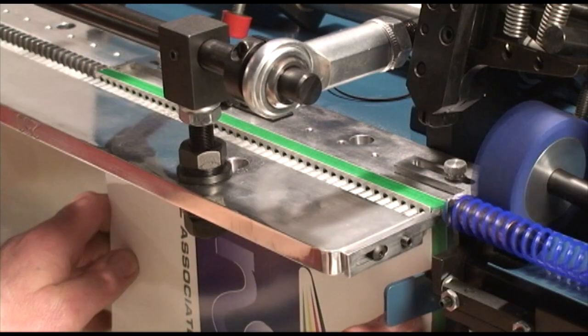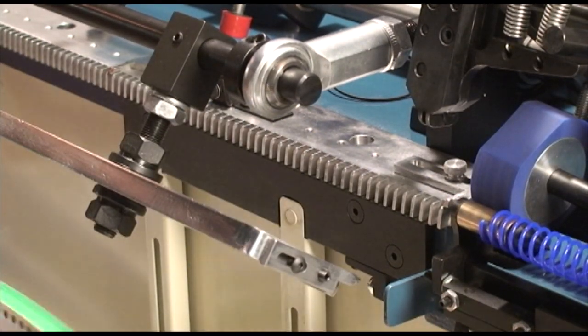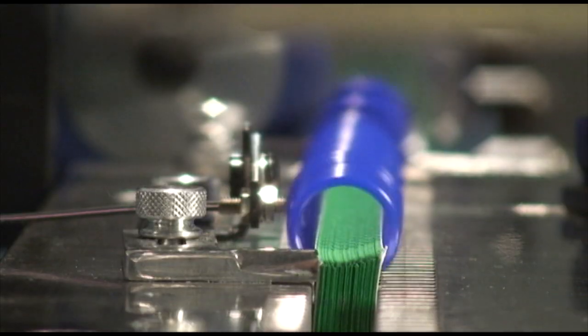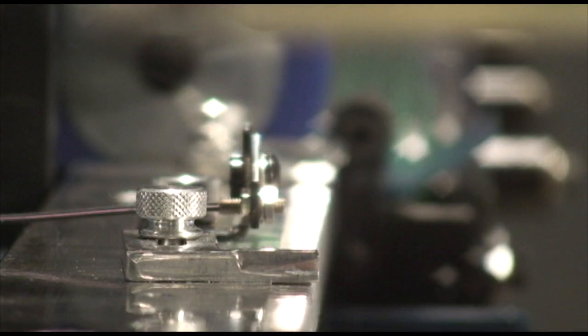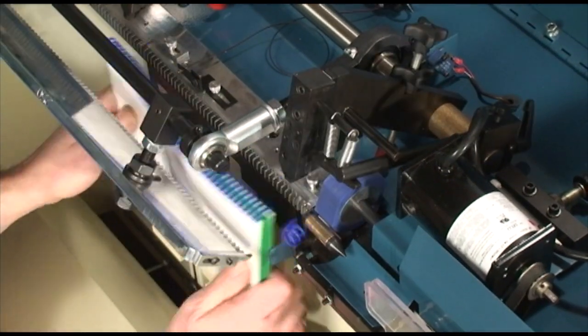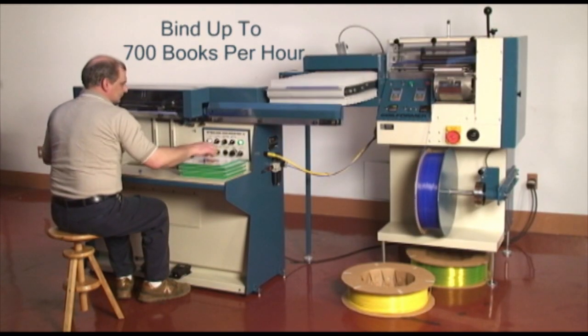Presenting the Sterling Coilmaster Automatic Plastic Coil Binding System. For nearly 50 years, Sterling has been solving bindery problems. They have done so again by introducing the first in-line automatic plastic coil binding system, after having introduced the first automatic plastic coil binder. Bind up to 700 books per hour on the Coilmaster.